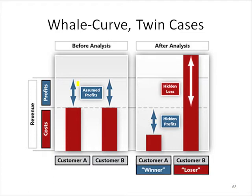What you can do, though, is what this curve says is: before, we assumed that two customers that both had the same sales and margin dollars and margin percent would make pretty much the same amount of money. But when we look at the whale curve, we realize that customer A, because their costs are so much lower than the typical customer, this is all basically profit that we didn't know we had.